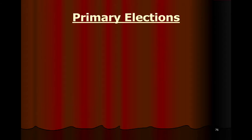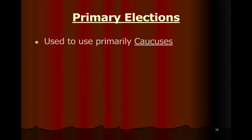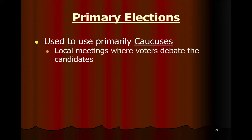Primaries have changed over time. In the past, we primarily used caucuses. A caucus was a local group of people from one of the political parties. They would meet, discuss the candidates, pick one, and then send a person from their meeting to a larger citywide meeting to represent their neighborhood's choices.